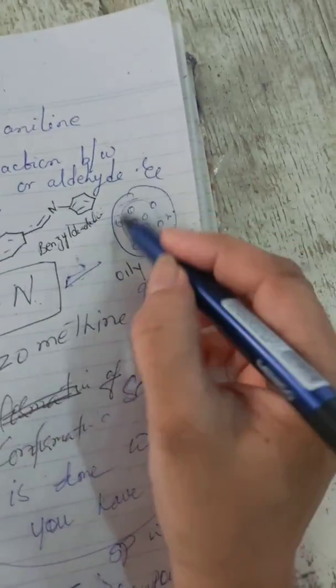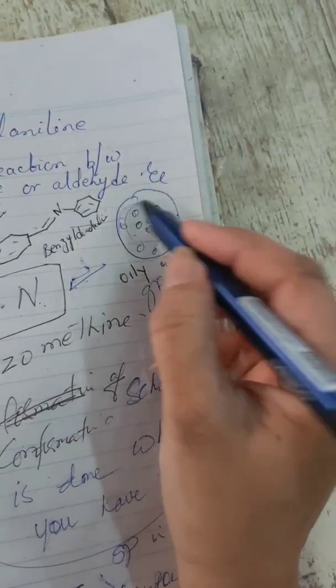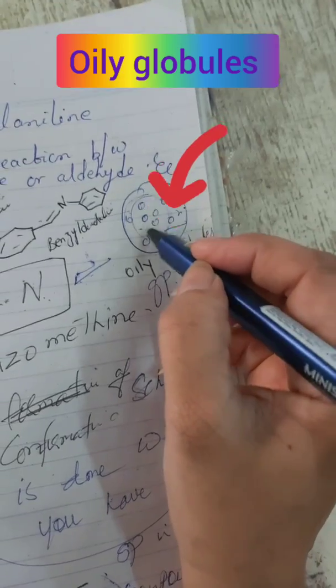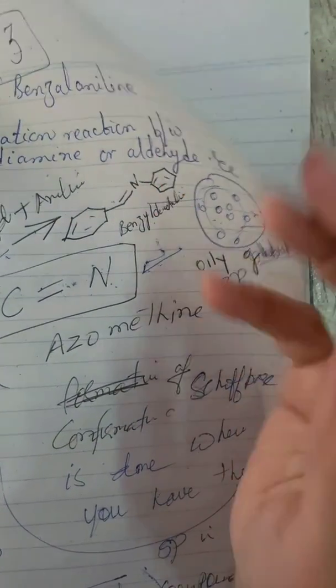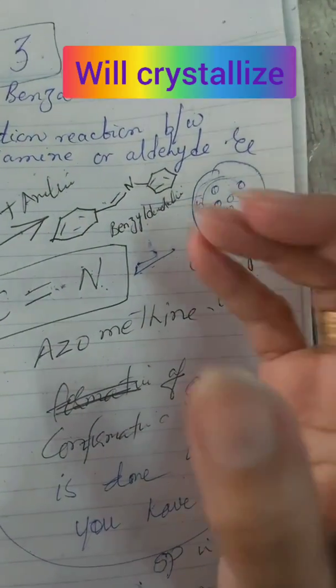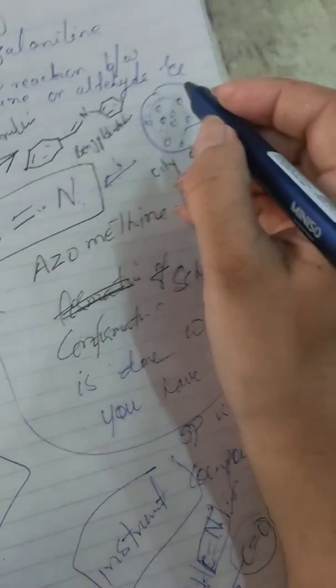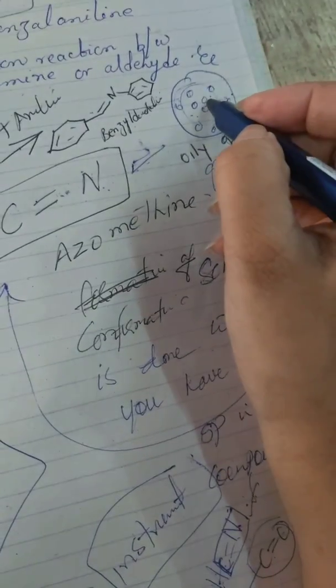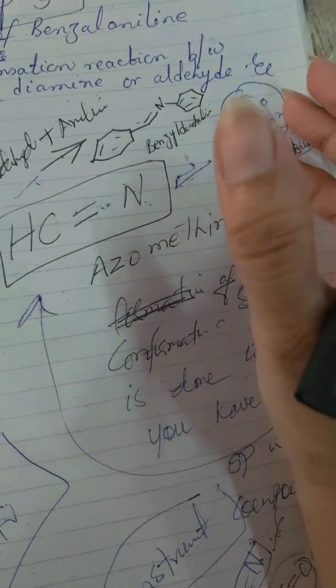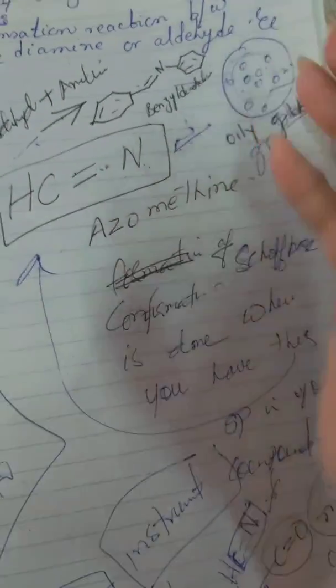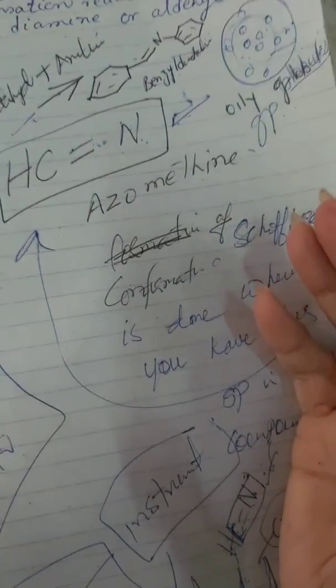After the reaction, oily globules will form, which will then crystallize. They will cool it down in a beaker and the product will crystallize to give them the crude product — the Schiff base. I explained them that this group is the azomethine group, which confirms the formation of a Schiff base.